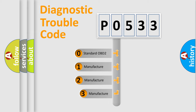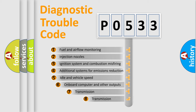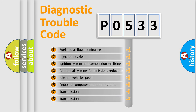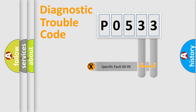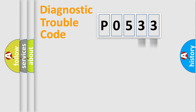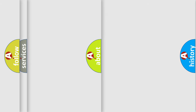If the second character is expressed as zero, it is a standardized error. In the case of numbers 1, 2, or 3, it is a more specific, car-manufacturer-specific error. The third character specifies a subset of errors. This distribution is valid only for the standardized DTC code, and only if the second character is expressed by the number zero.